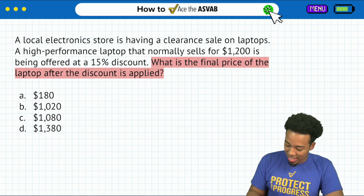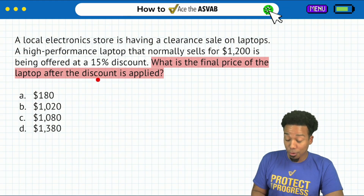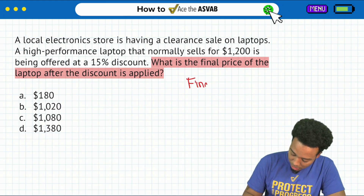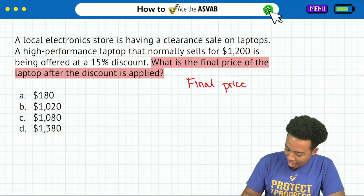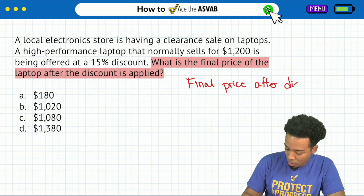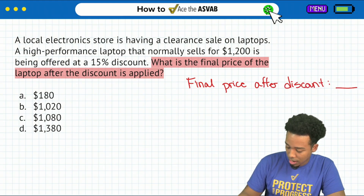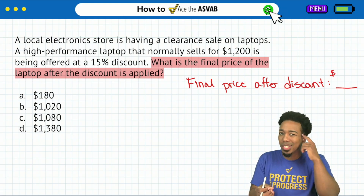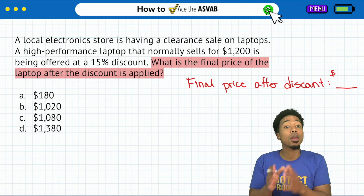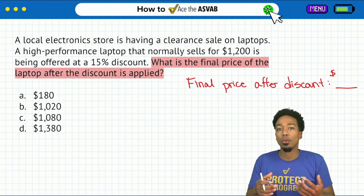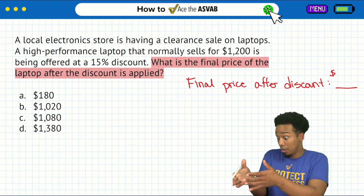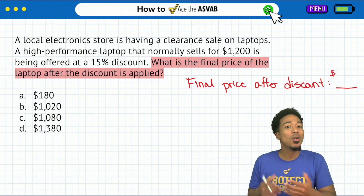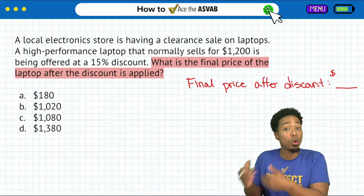What we see here is: what is the final price of the laptop after the discount is applied? So what I'm looking for is final price after discount. We always write down what we're looking for so we can stay grounded, because once we do the calculation, it's very important to understand what those numbers are so we don't get trapped into thinking we have the answer when we don't.